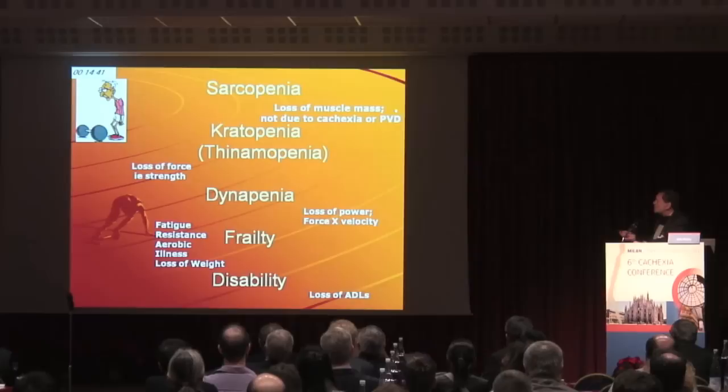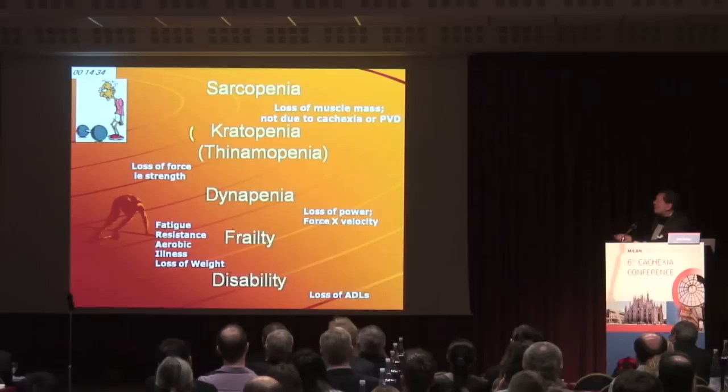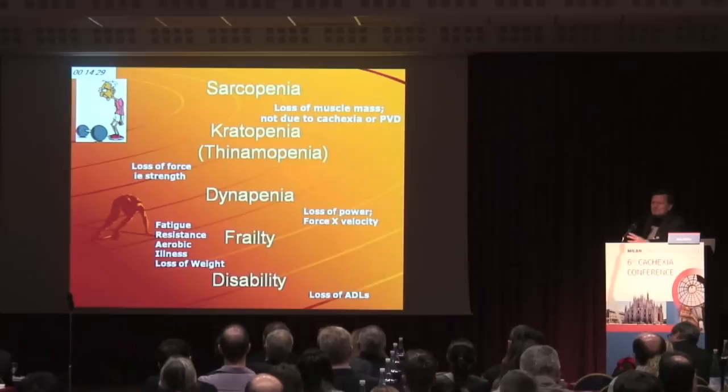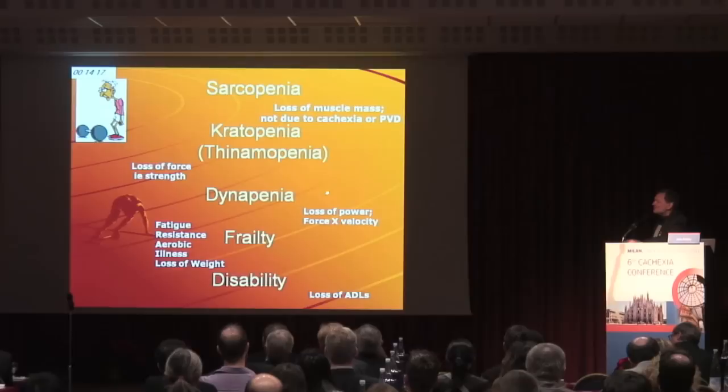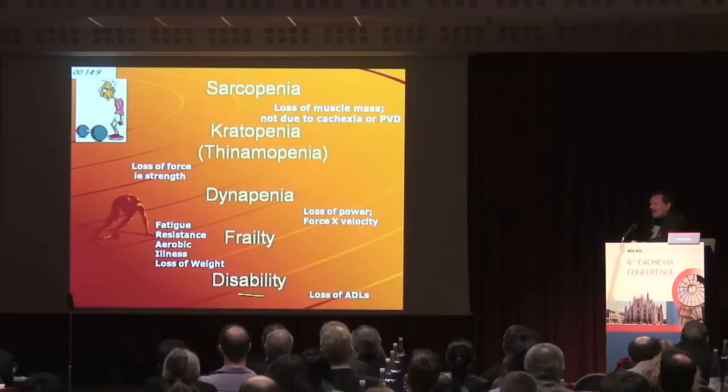We really have a cascade that goes from sarcopenia — which is your loss of muscle mass not due to obvious causes such as cachexia or peripheral vascular disease — going through loss of force and strength. Dynapenia is my favourite term. Basically they're suggesting that you're strong or not strong. And then dynapenia is a term I personally like, but nobody else at the meeting liked, so just realize that it didn't make it. That's all consensus.